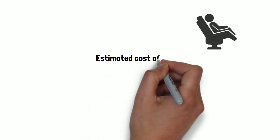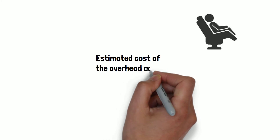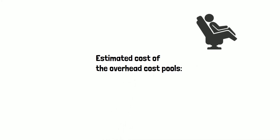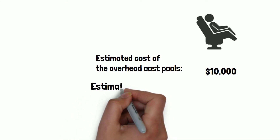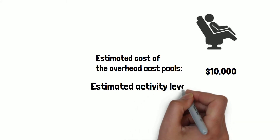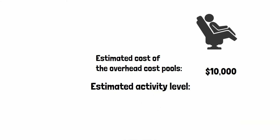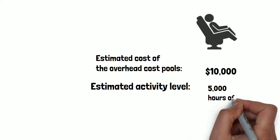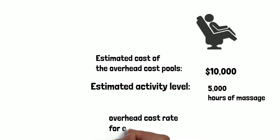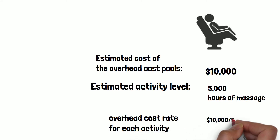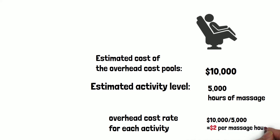The estimated cost for running the massage program — this is the overhead cost — is estimated to be $10,000. The estimated usage, which is the activity level and also the cost driver, is 5,000 hours of massage. So the overhead cost rate per activity will be $10,000 divided by 5,000 hours of massage, meaning every massage hour costs $2.